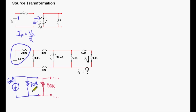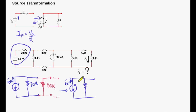Now we have two resistors in parallel and we can combine them. The combination of the 20k and the 80k resistor will give us a 16k value. So we got rid of one resistor — instead of two, we have one. That's good; we are simplifying our circuit. Let's add two more components, the 3k and the 1k ohm.